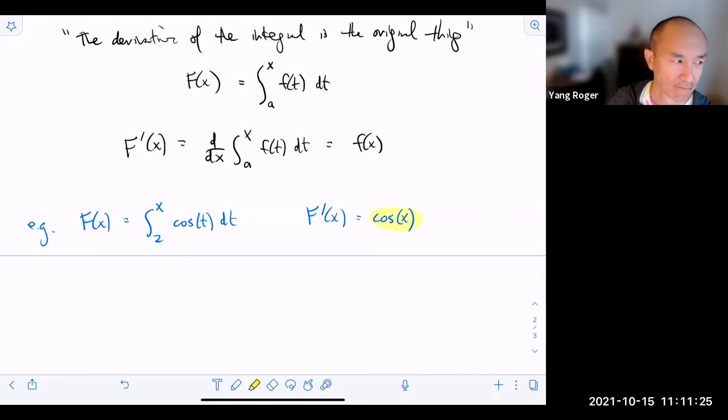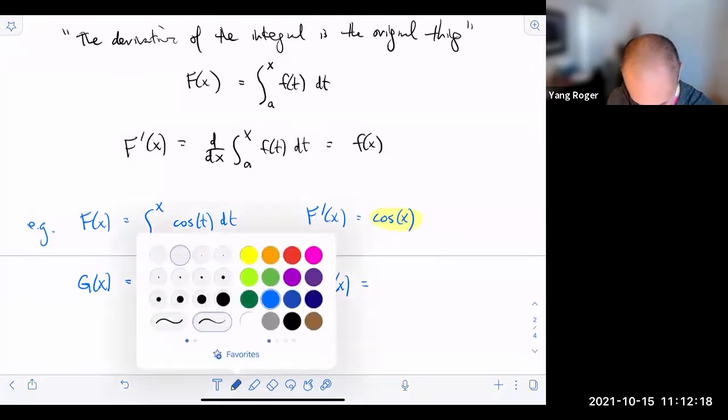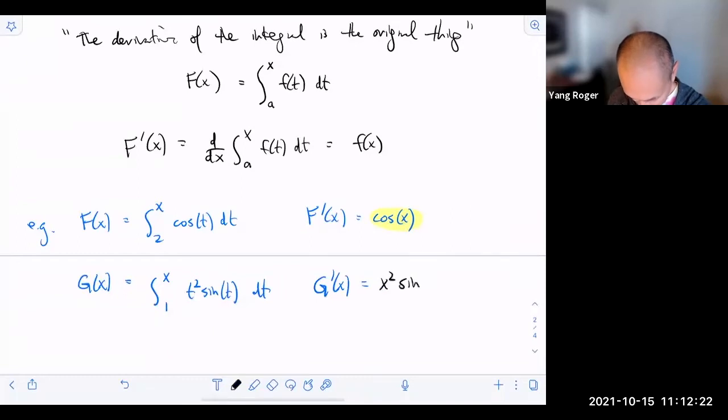I'm going to have you guys try this. You have g(x) is equal to the integral from 1 to x of t squared sine(t) dt. I want you guys to tell me what g prime of x is. So take a second to think about it. Type your answer in the chat box. And we'll count it down. Ready? Three, two, one. Enter. Yes. Perfect. All you do is you write the inside and you replace it with an x. This is x squared sine of x. Done.